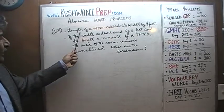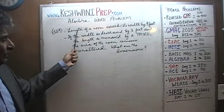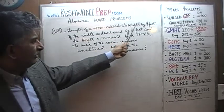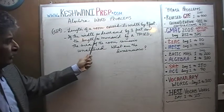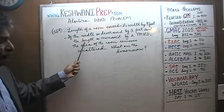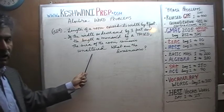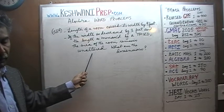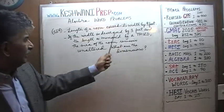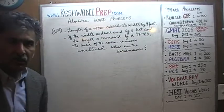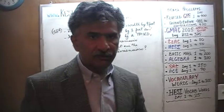It says that the length of a room exceeds its width by 9 feet. We are further told that if we were to decrease the width by 3 feet and increase the length by a third, the area of the room remains unaltered — nothing happens to the area. The area remains unchanged. The question simply is: what are the dimensions? Let's do it together, shall we?